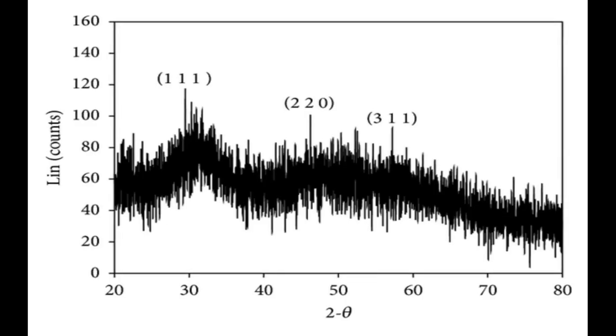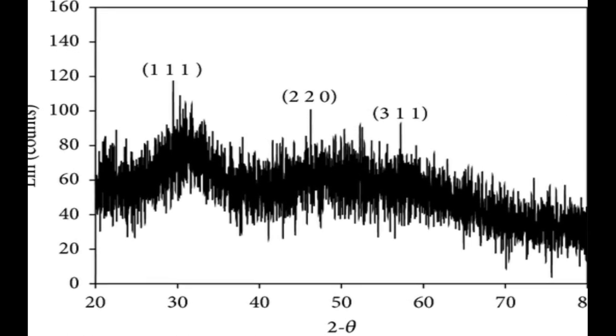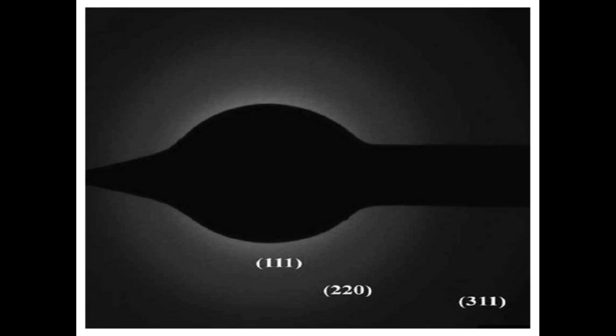The average size of CDS and ZNS nanoparticles was in the range of 10 to 25 nanometers and 65 nanometers, respectively, with a spherical shape.